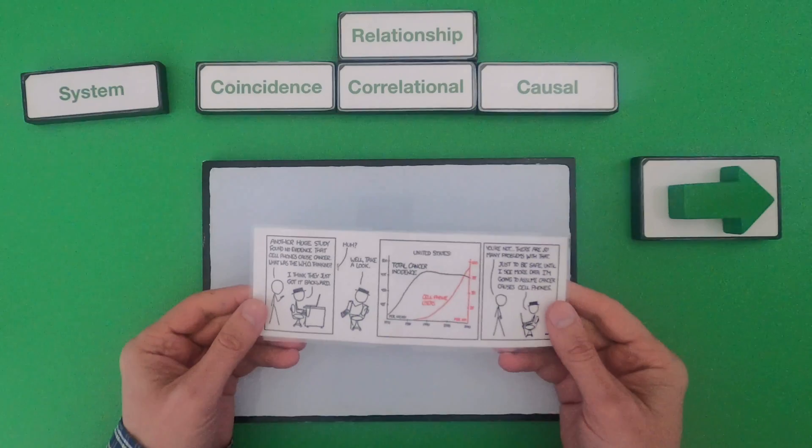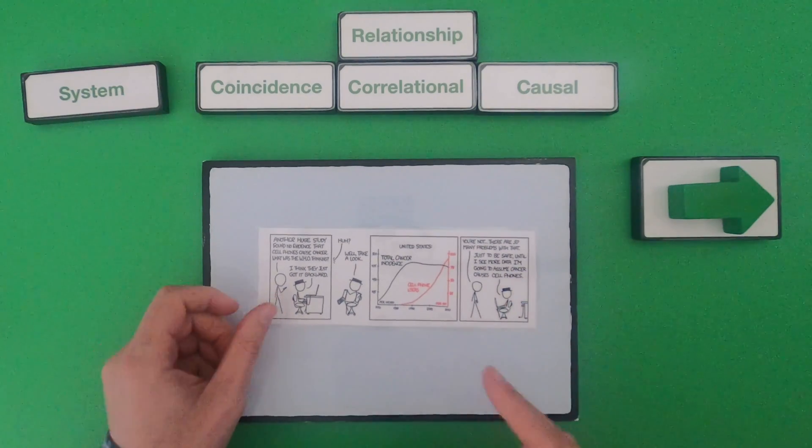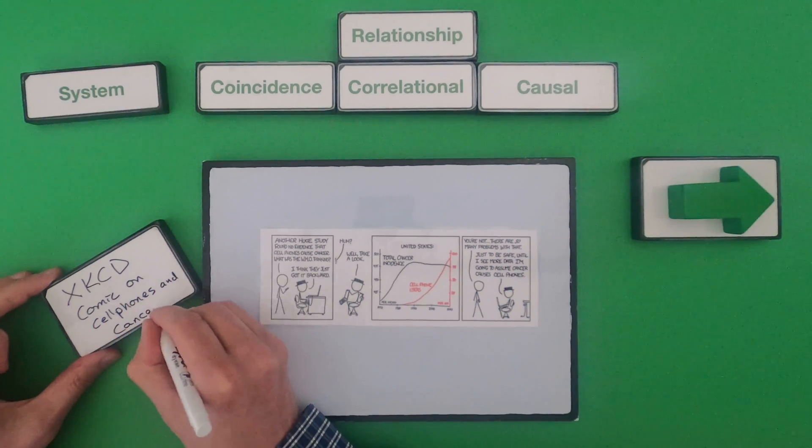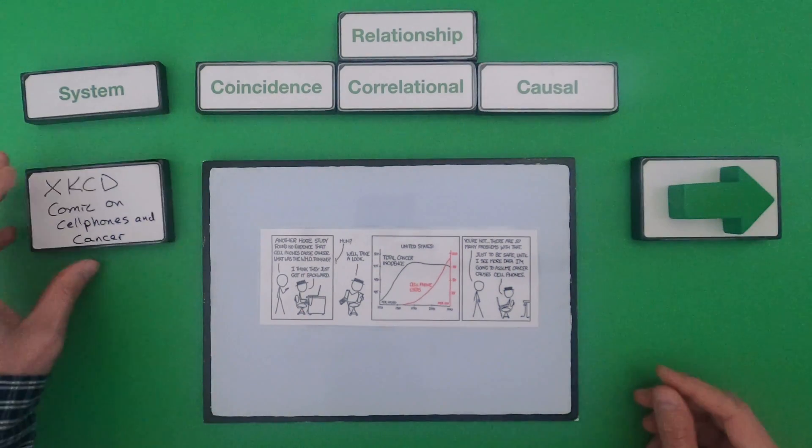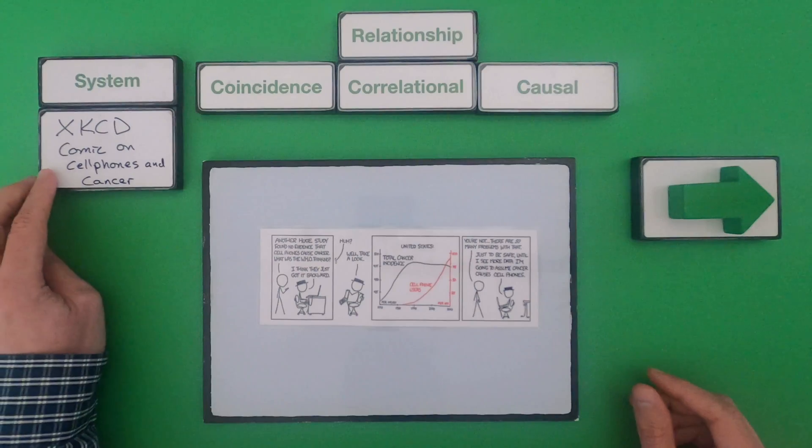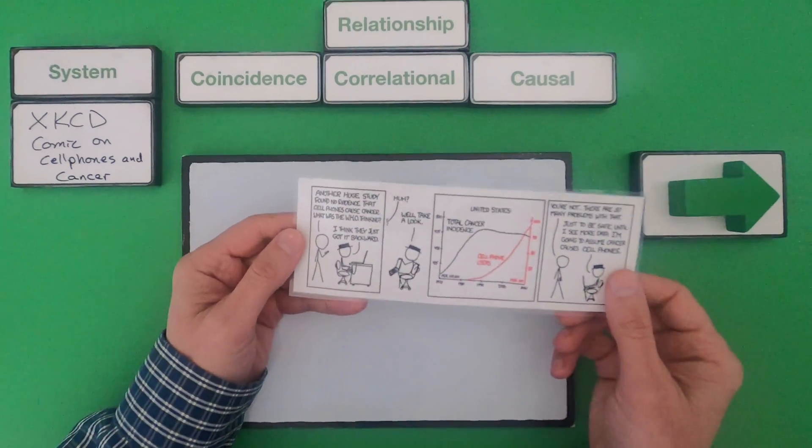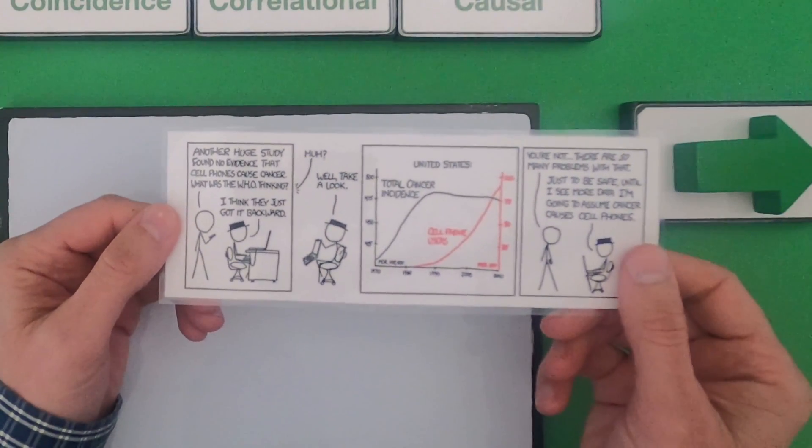Okay, for the next one we're going to look at this XKCD comic. So let me define the system. So the system is going to be this XKCD comic on cell phones and cancer. If I were to read it to you at the beginning, another huge study found there's no evidence that cell phones cause cancer. What was the World Health Organization thinking?